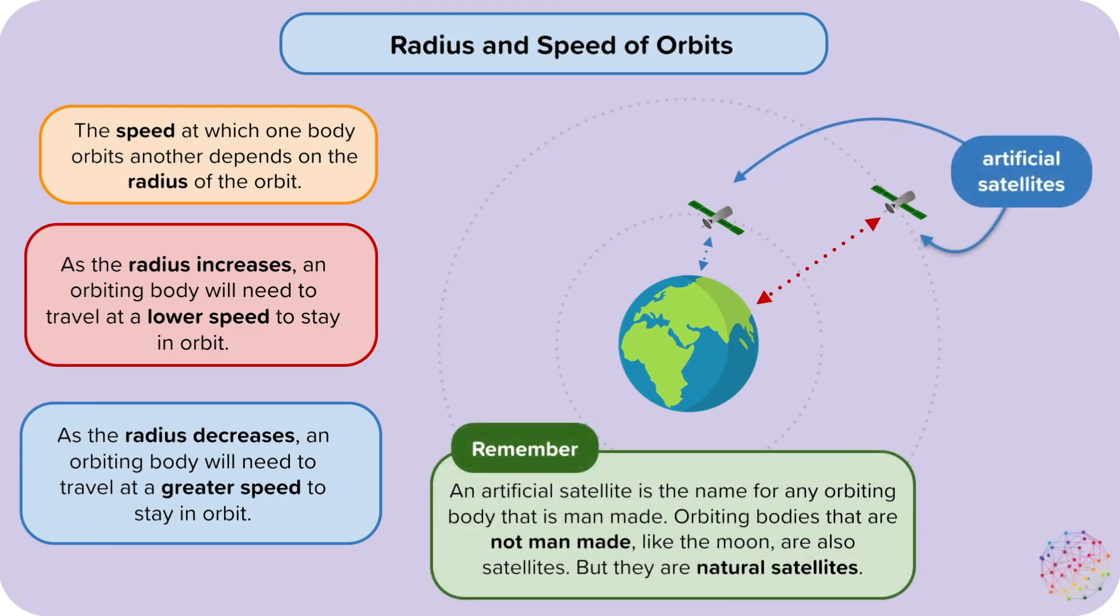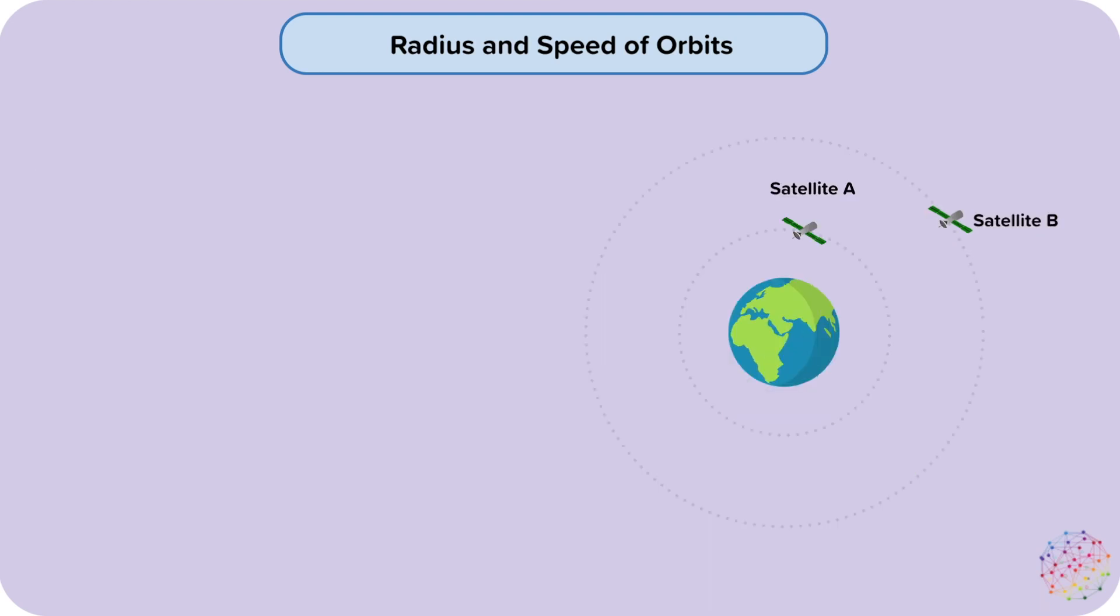Remember, an artificial satellite is the name for any orbiting body that is man-made. Orbiting bodies that are not man-made, like the Moon, are also satellites, but they are natural satellites. Now we're going to look at two examples to understand why there is a link between the radius and speed of an orbit.